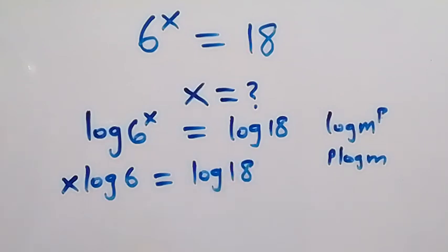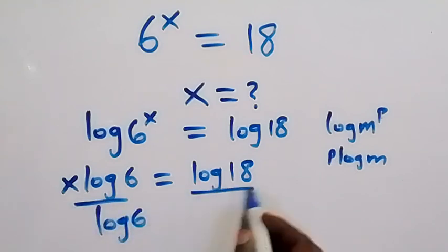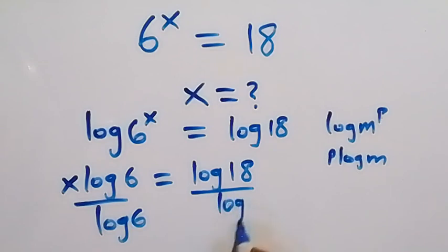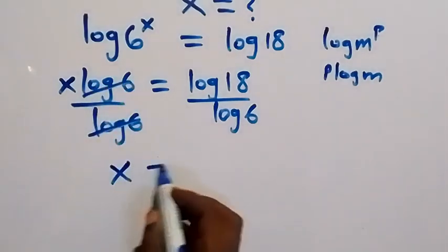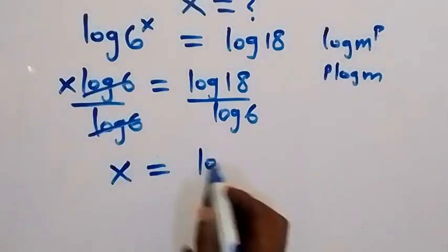And from here we divide both sides by log 6. Divide this side by log 6 also, divide this side by log 6. And from here, log 6 cancel each other. We are left with x which is equals to log 18.